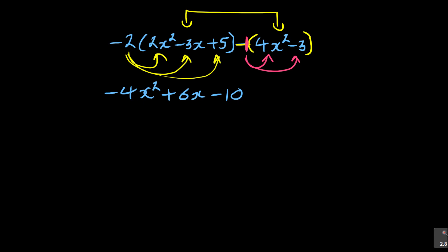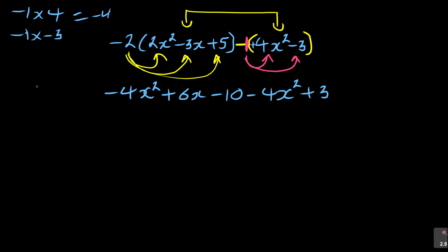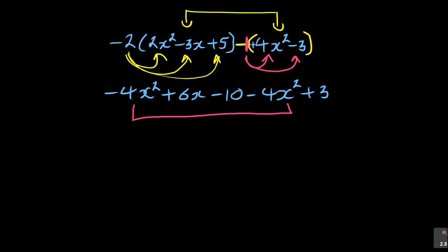When you interchange the sign, positive four becomes minus four x squared - you're saying minus one times four, which is negative four x squared. Minus one times minus three: negative times negative is positive three. Use your calculator to write and test your answers. Now look at the like terms - bring them together.